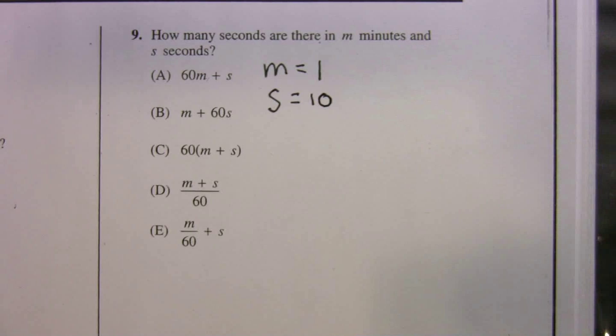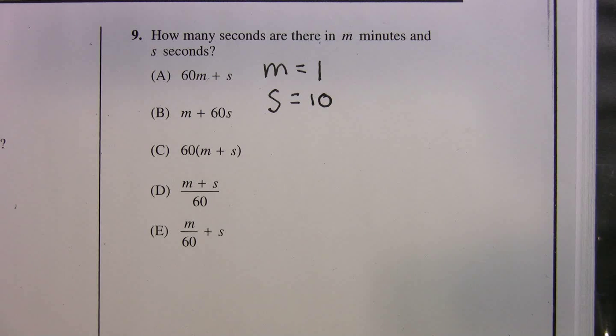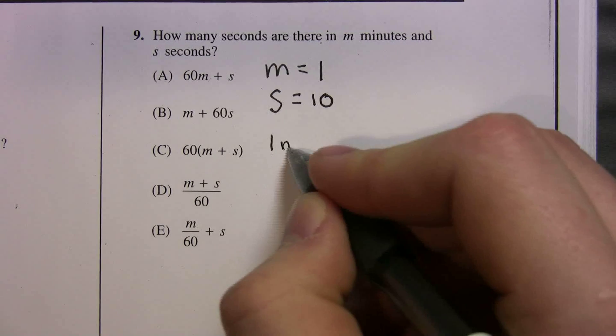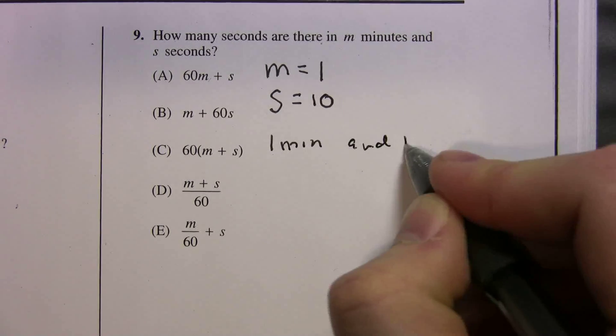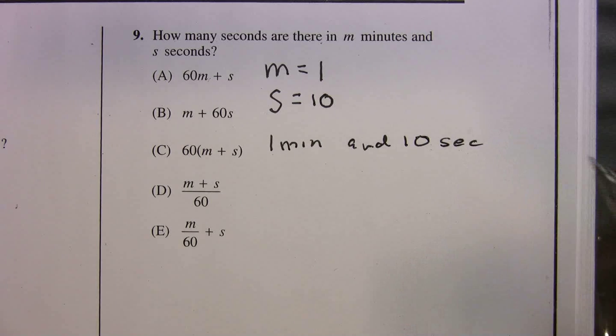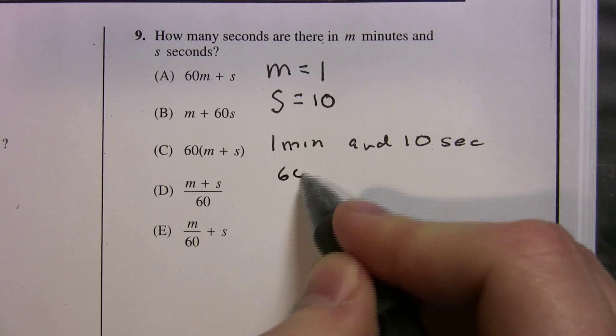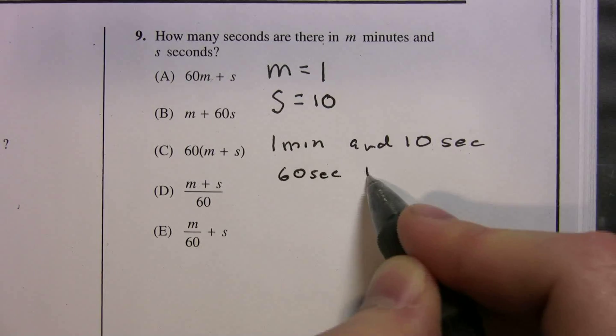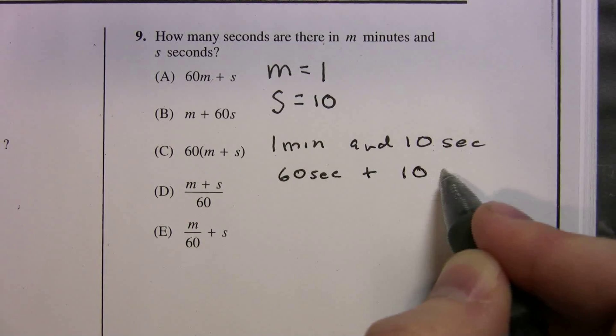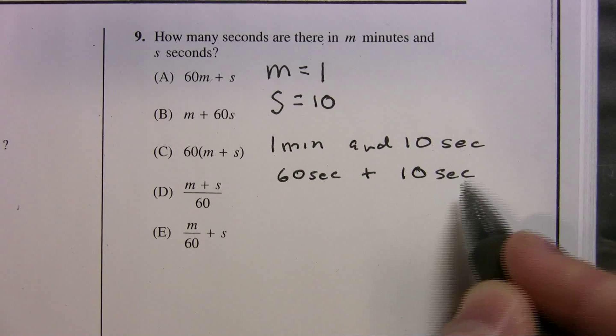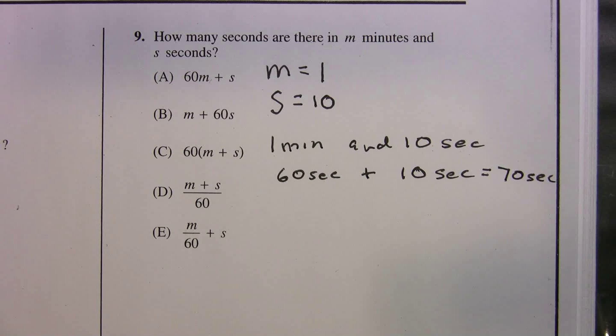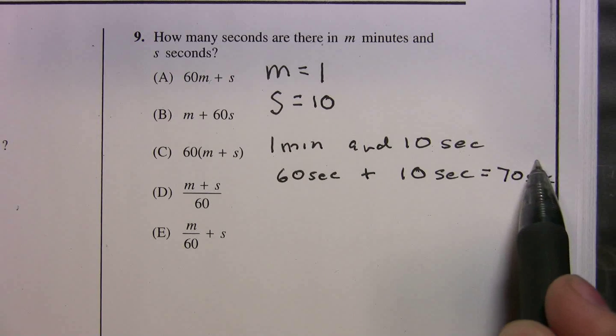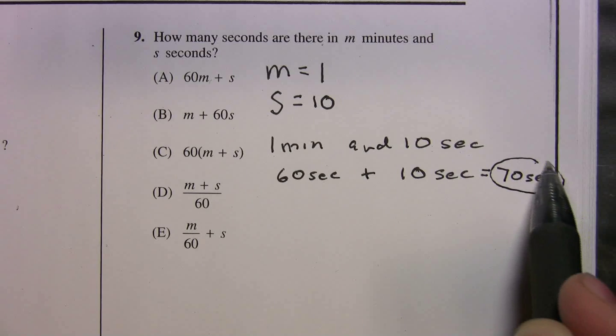So I'm going to read it back. How many seconds are there in 1 minute and 10 seconds? We all know that 1 minute has 60 seconds. So this is 60 seconds plus 10 seconds, we get a grand total of 70 seconds. So now we have our final answer. We got 70 seconds. This is what I call our magic number.